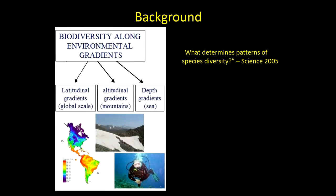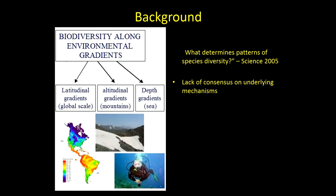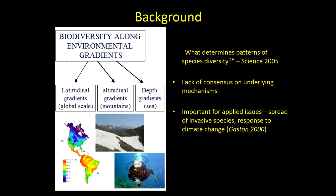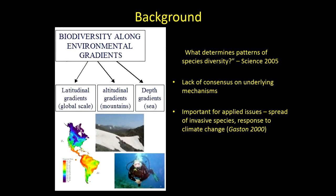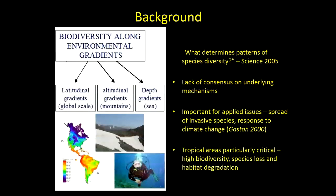There's a lack of consensus on the underlying mechanisms that generate species richness and diversity gradients. And it's not just an esoteric exercise - it's also important for applied issues like the spread of invasive diseases and response to climate change. It's really important to understand how species respond along environmental gradients. Tropical areas are particularly critical because they have very high biodiversity and currently very high levels of species loss, habitat degradation, and fragmentation.